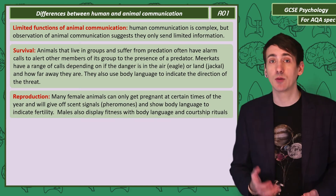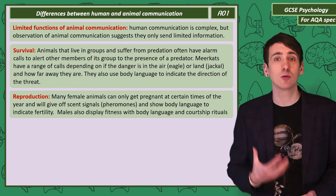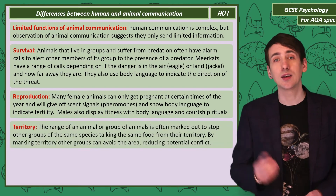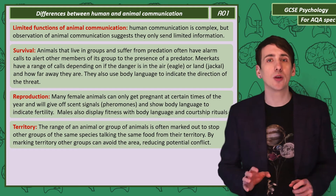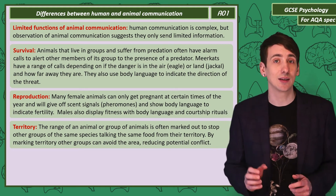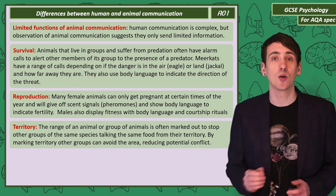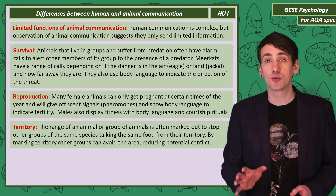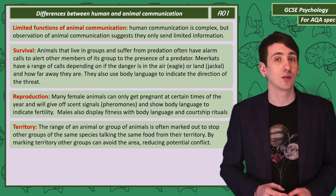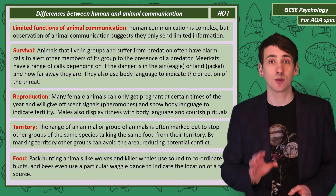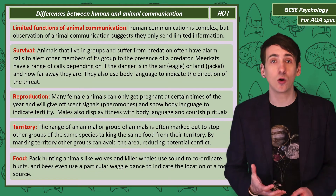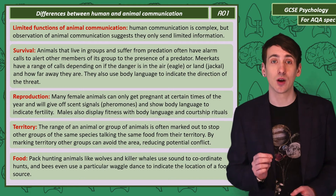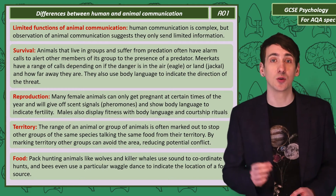Males will also communicate reproductive fitness with body language and courtship rituals. Animals will often fight to protect their territory, but to avoid that conflict they can use scent signals to mark territory so other members of their species can avoid the area. Some predators hunt for food in packs and coordinate their attacks with sound — examples include wolves and killer whales. Honeybees use a waggle dance to show the location of food from the hive.